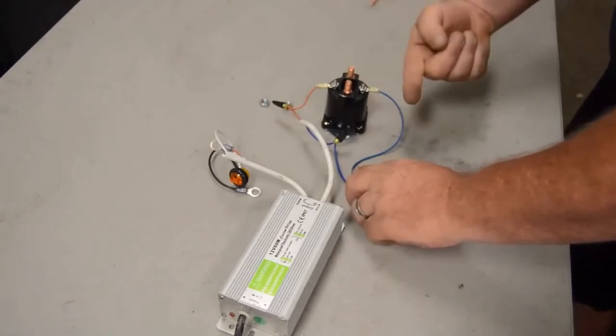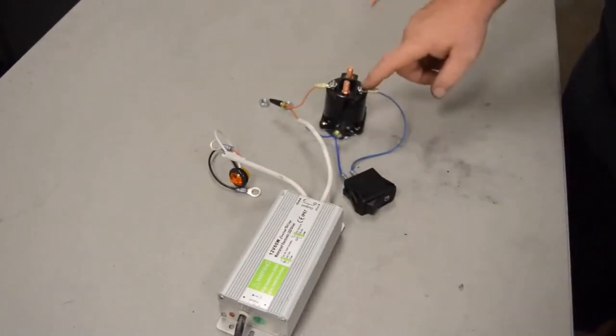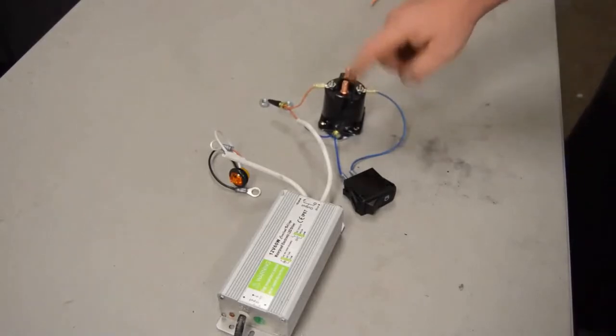In the on position the switch comes up and it makes contact with these two. So that's all you're doing when you throw power to it is we're bridging the contact between these two points. Now you'll notice these are much more robust. The big side of your solenoid is where you're going to get your power, it's really just a bridge.